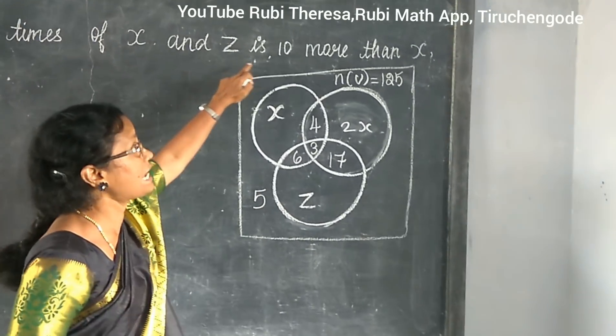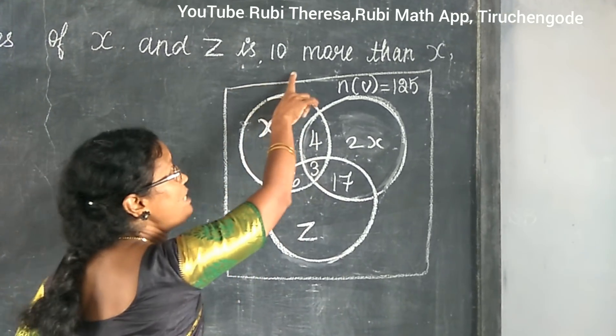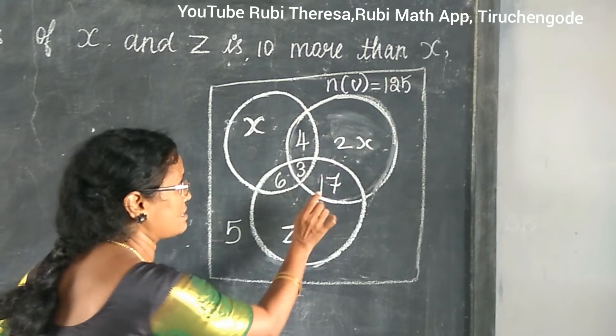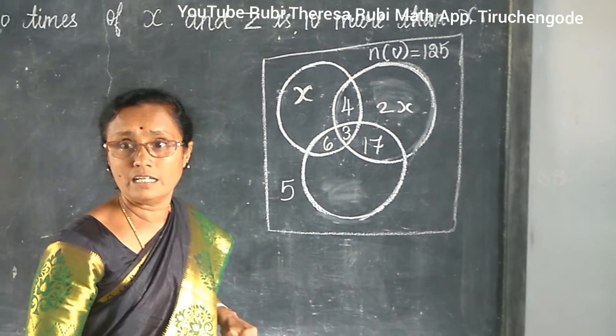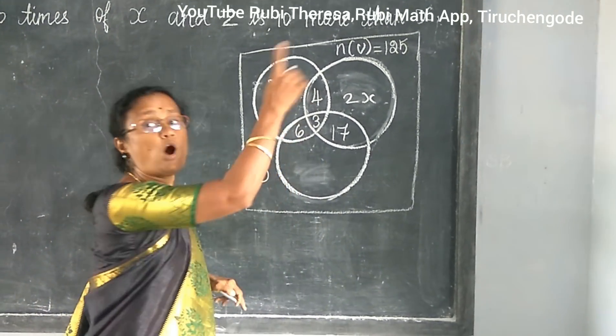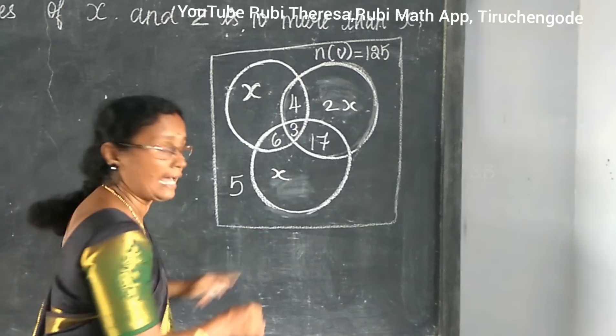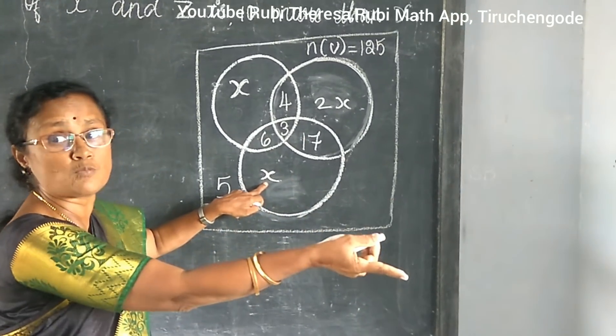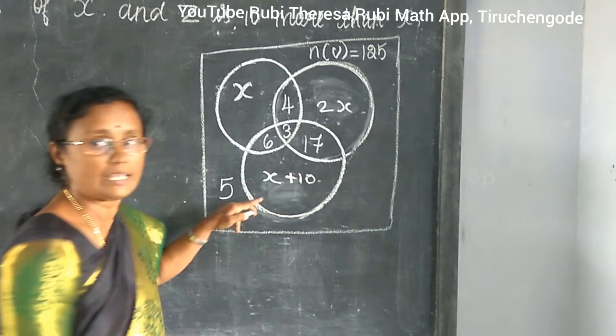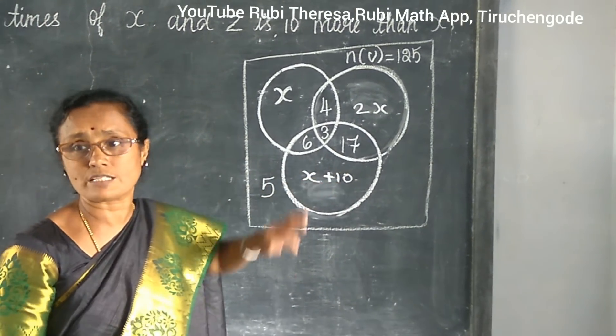Next one is what? Z is 10 more than X. So instead of Z, what can you write? 10 more than X. So X is there. With X, 10 is more. More means plus 10. So I replace Z by X plus 10.